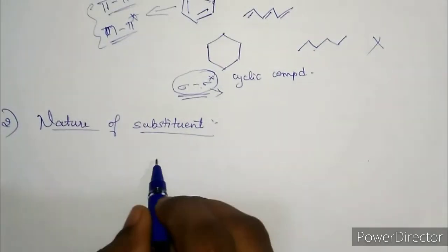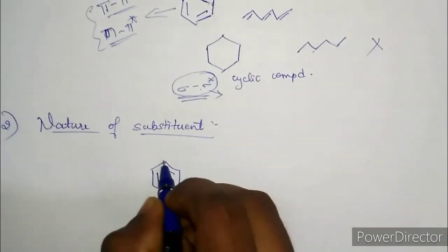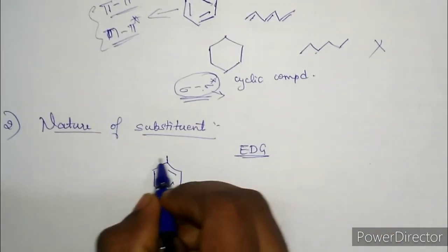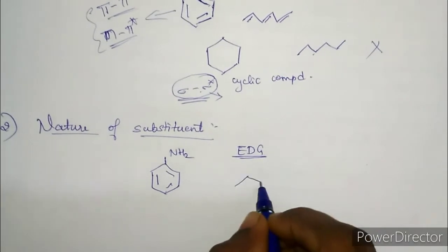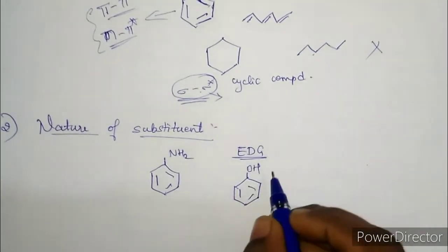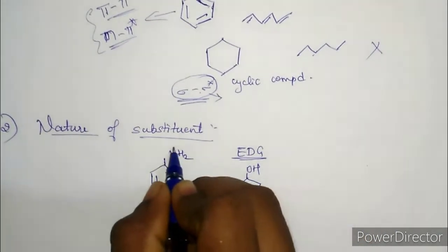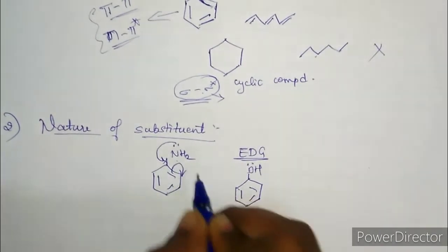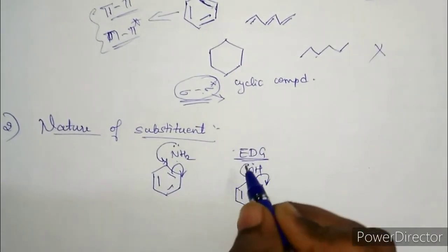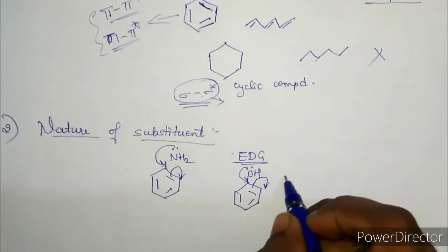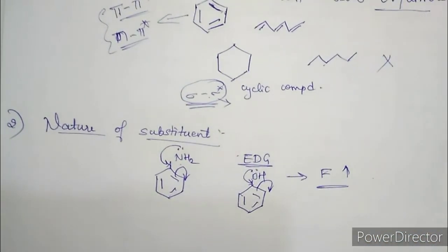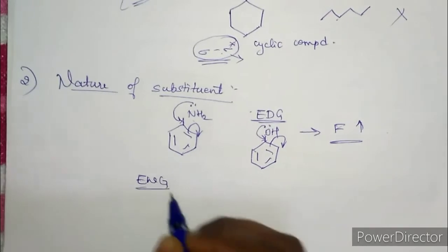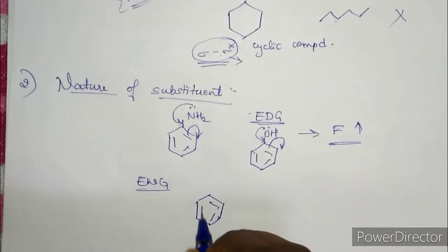The second factor is the nature of the substituents. If you have benzene with an electron donating group — like amines (NH2) or OH groups — these groups donate electrons because of the lone pair on nitrogen or oxygen. Whenever electron donating groups are present in a system, the fluorescence increases. While electron withdrawing groups, like carbonyl, carboxylic, or nitro groups, decrease the fluorescence intensity.